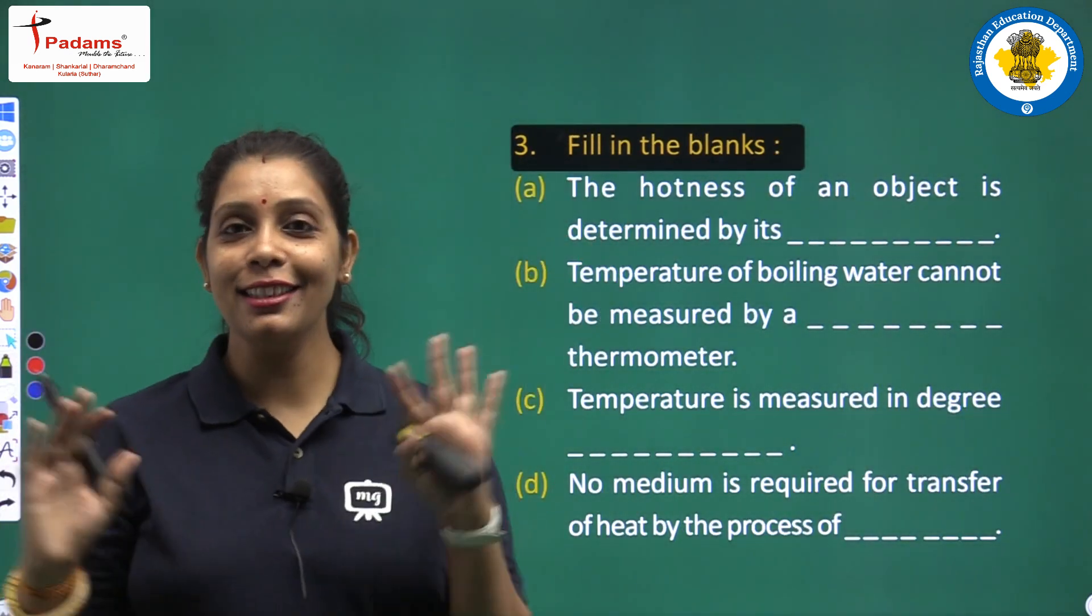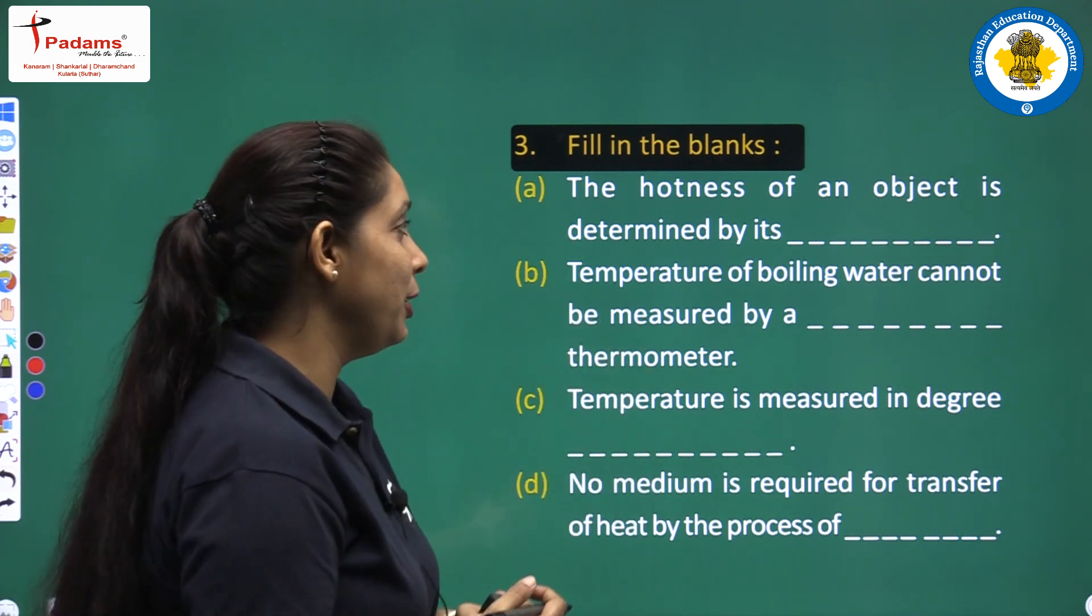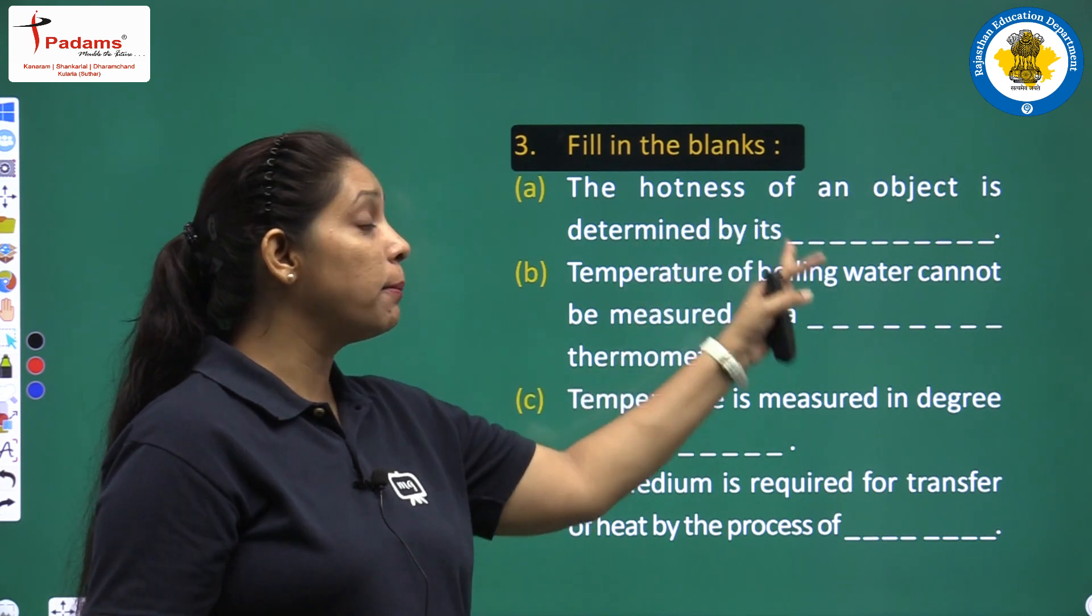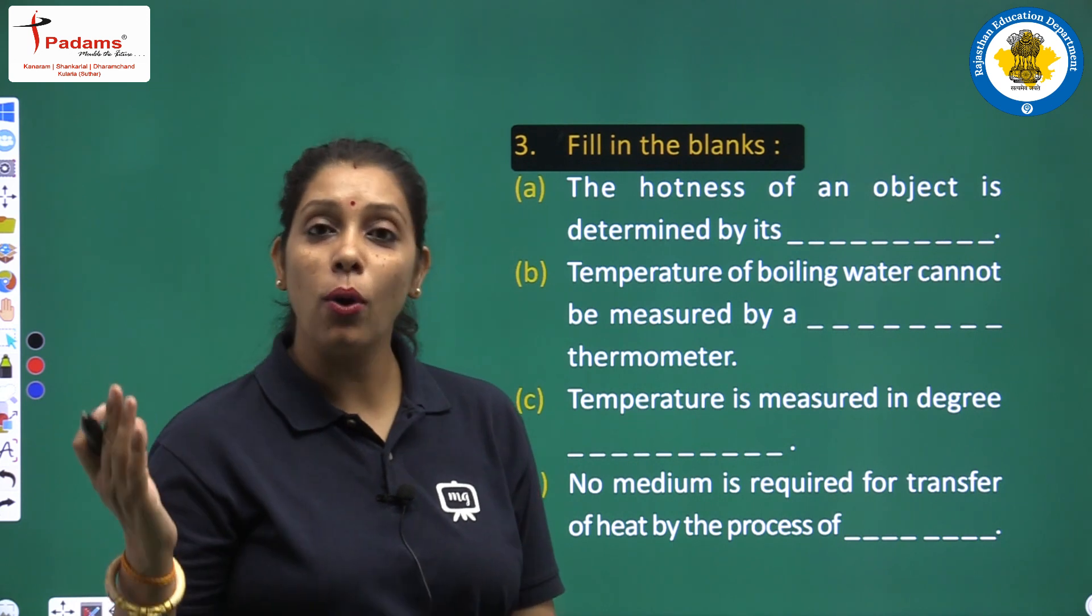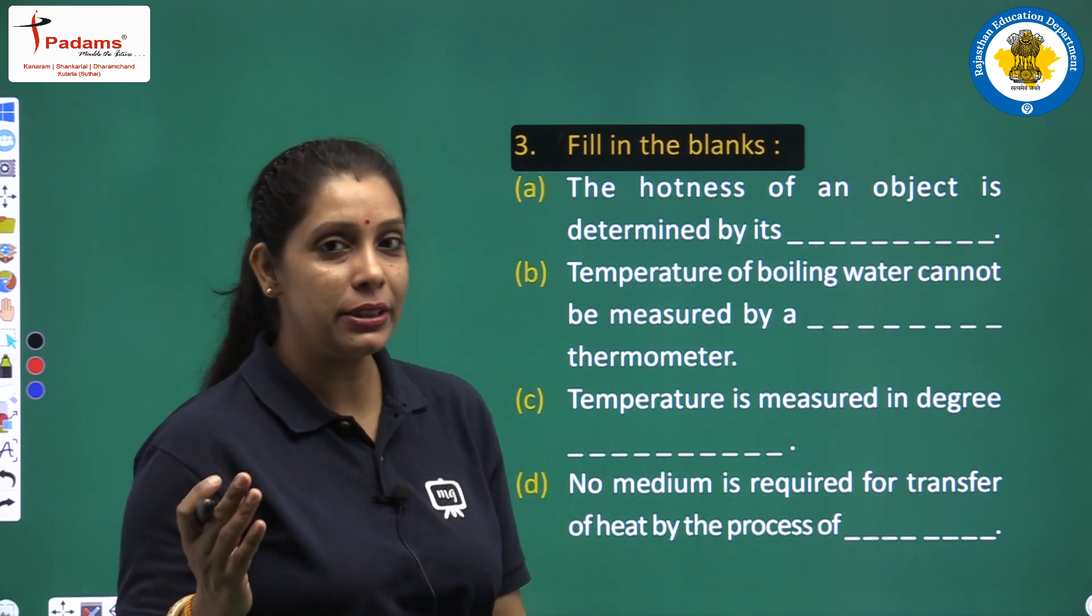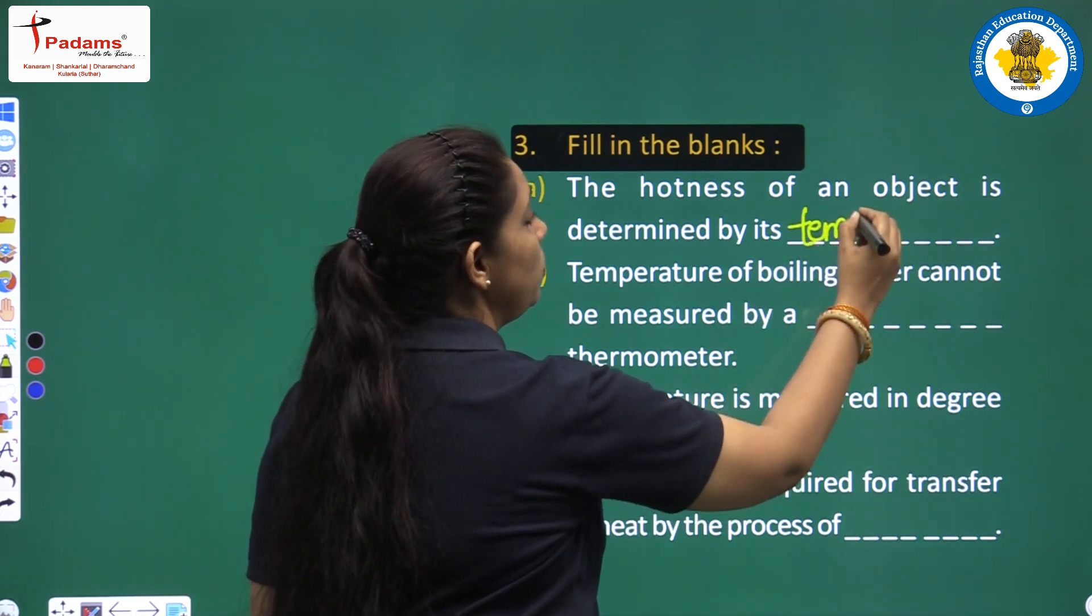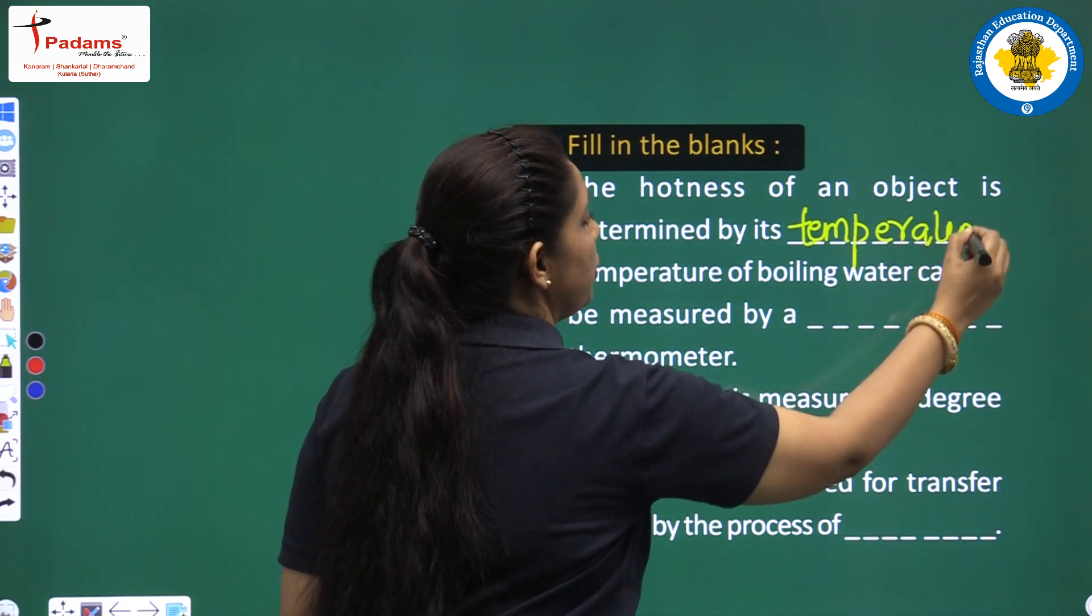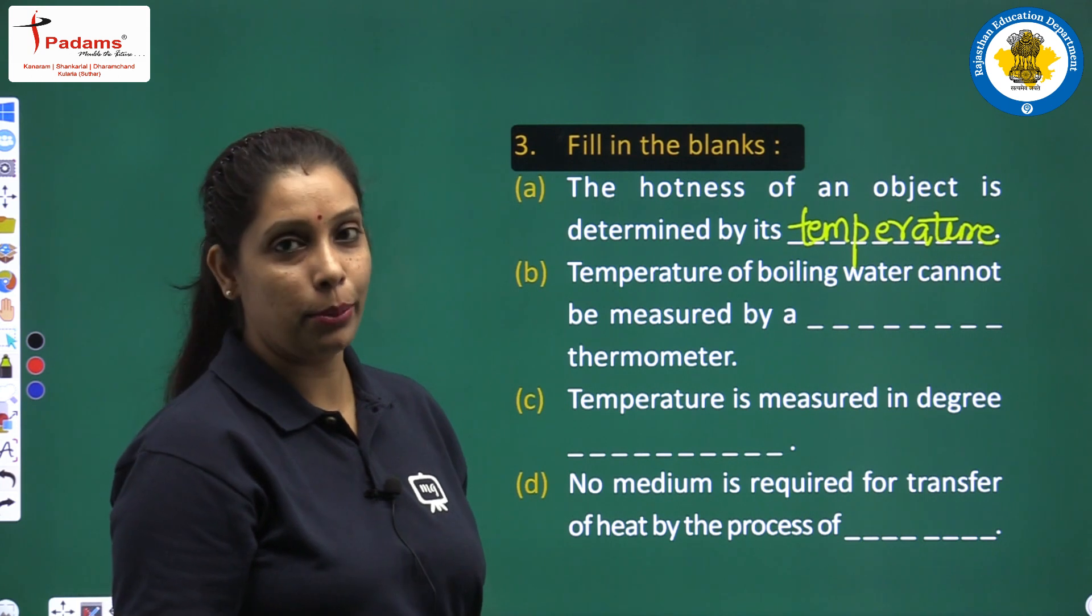Fill in the blanks. The hotness of an object is determined by its temperature. Write down temperature. If the question asks about coolness, the answer is the same. It is temperature.